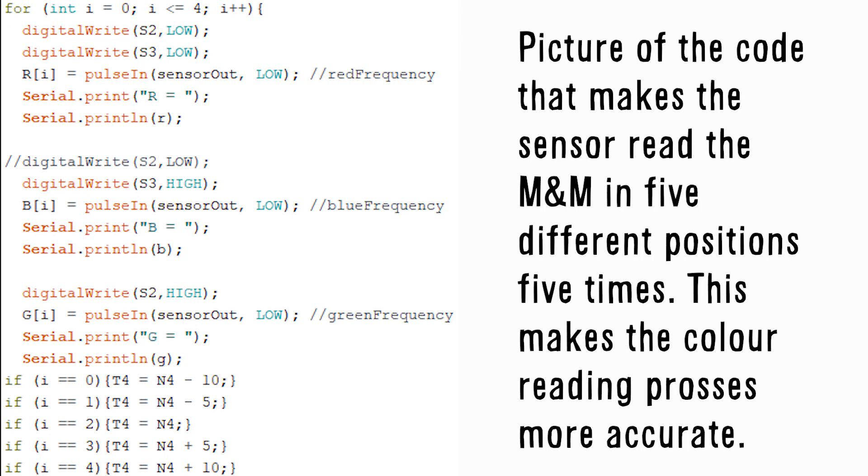After the M&M comes out of the hopper, the motor drags them into the sensor area. The sensor reads the M&M's color value five times for more accurate results. After that, the sensor finds the average of the values and determines what color the M&M is.